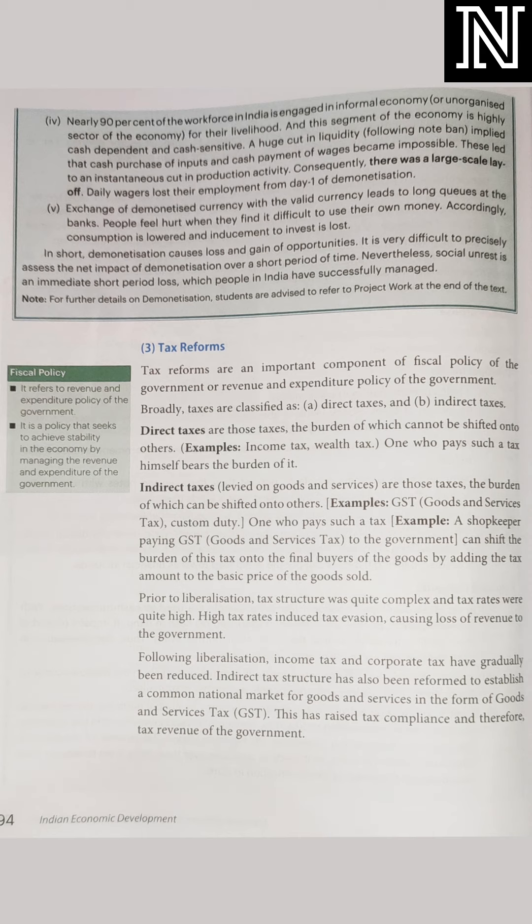सारे indirect taxes, variety of indirect taxes — before it was charged separately. That tax was the sum total — सारे taxes को plus करके they had made a single tax, and that single tax is called as GST. Clear? What is GST is clear to everyone now? इतना समझ में आ गया ना?